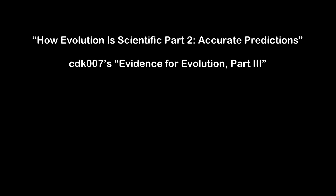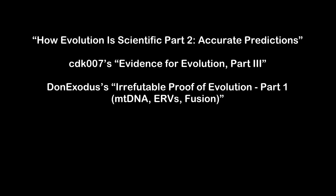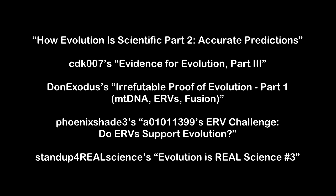I've mentioned ERVs and their relationship to the nested hierarchy of evolution, and this has also been covered in other videos by CDK007, Don Exodus, and many others. This is extremely powerful science, and I strongly recommend you watch at least one of these videos before continuing with this one. This should be a slam dunk for evolution, but of course creationists will do anything they can to avoid accepting it. In this case, they keep claiming that ERVs violate the nested hierarchy while not understanding how this is actually happening.